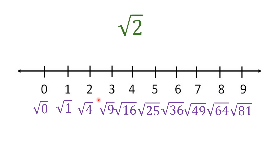Let's have another one: square root of 2. The square root of 2 falls in between square root of 1 and square root of 4. Where is 2 closer? It's closer to 1, so we put the point closer to 1 on the number line. You don't need to know the exact value — just look at the numbers inside the radical and determine which perfect square they're closer to. If it were exactly in the middle, like square root of 2.5, you'd place it exactly halfway.